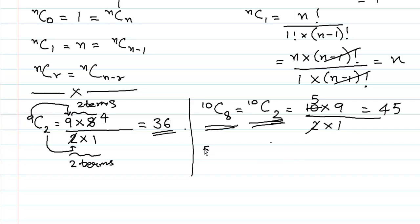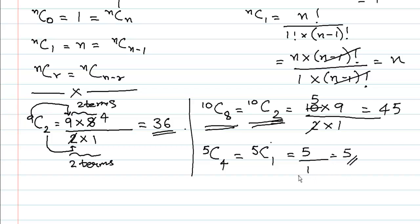Let us take one more example: 5C4. We rewrite it as 5C1 because 4 plus 1 is 5. The numerator starts with 5 and has just one term, and the denominator starts with 1 and has one term. So 5 upon 1 equals 5. Therefore 5C4 equals 5. This approach will be very useful when solving problems, especially in the binomial theorem.